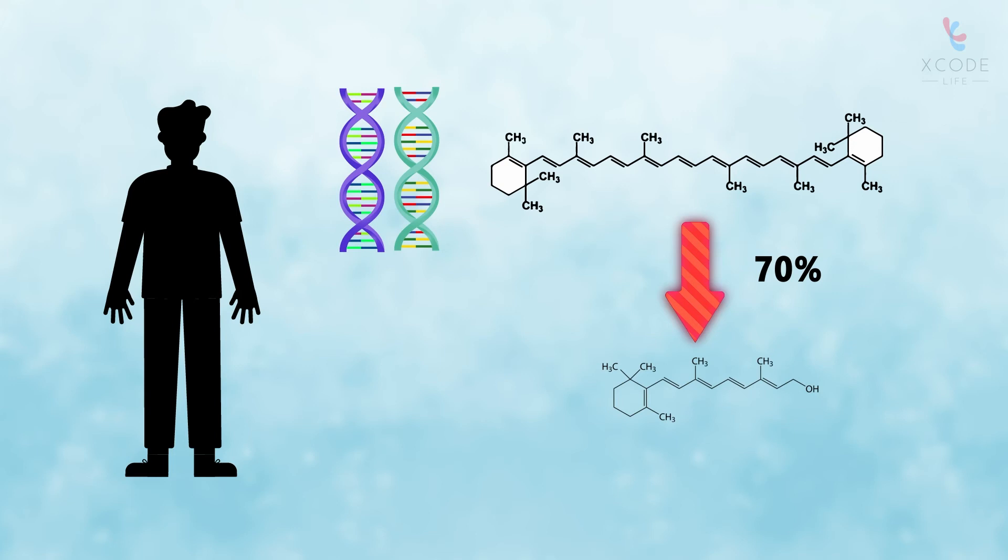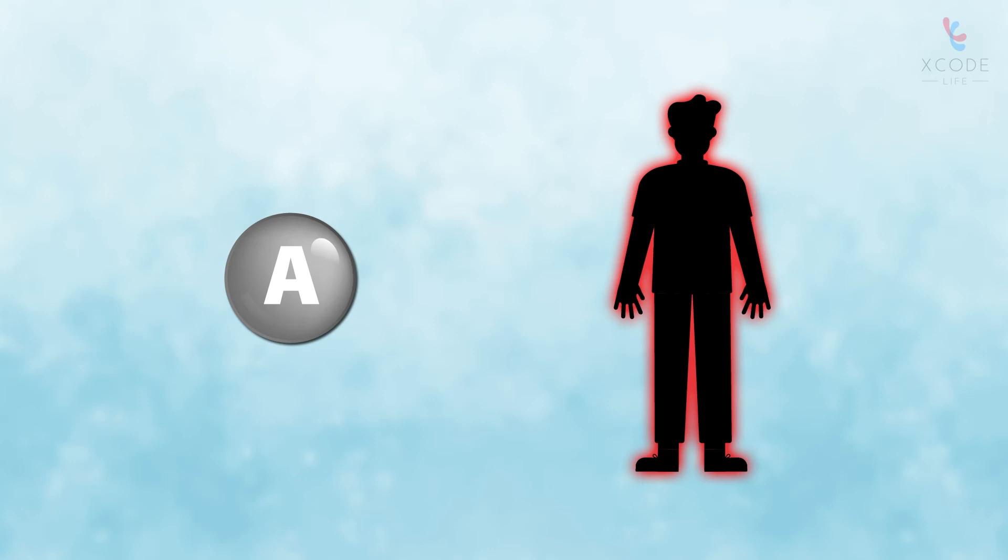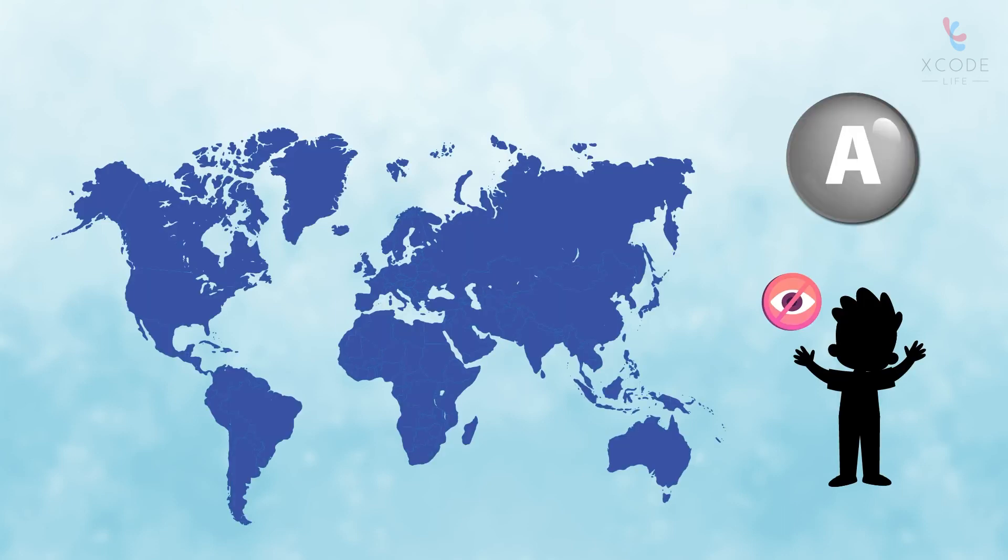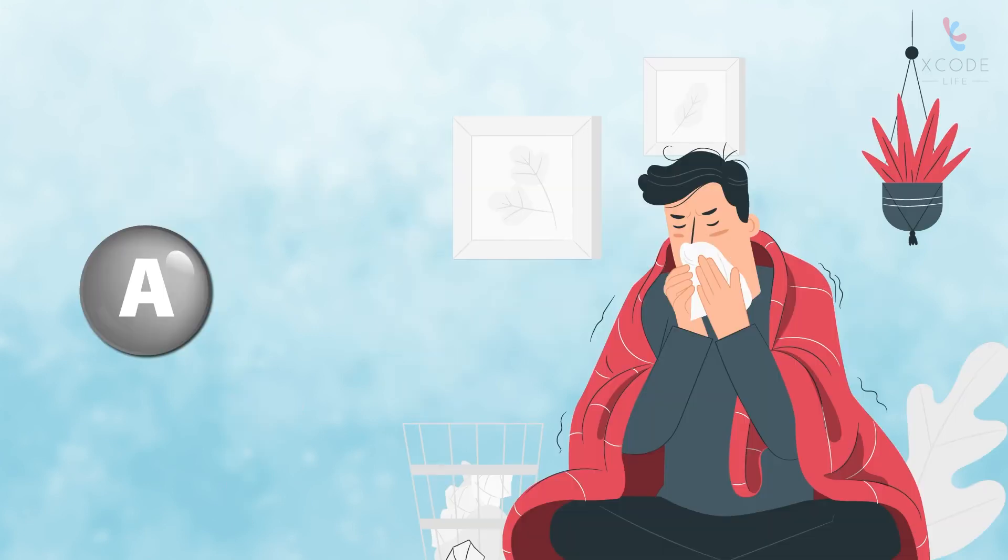Vitamin A deficiency has serious health implications. According to the World Health Organization, vitamin A deficiency is the leading cause of preventable blindness in children worldwide.